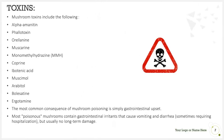Now coming to toxins — these are the toxins present in mushrooms. The most common consequence of mushroom poisoning is simply a GI upset. Not all mushrooms will cause death; some will simply cause a GI upset. Most poisonous mushrooms contain GI irritants that cause vomiting and diarrhea, but usually no long-term damage occurs.